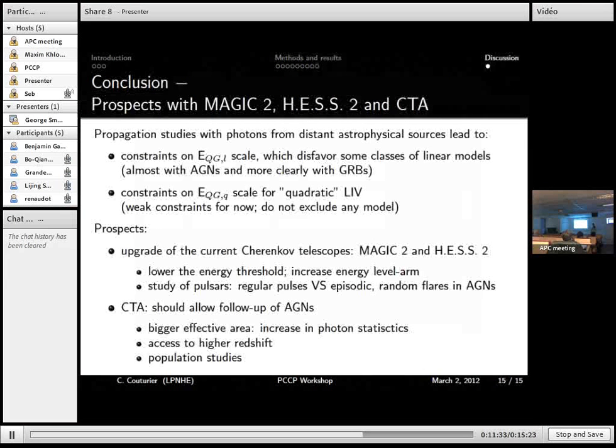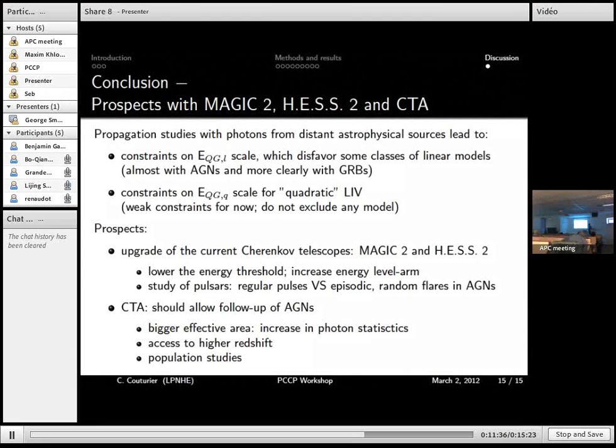So to conclude, propagation studies with photons from astrophysical sources gave us constraints on the quantum gravity scale. So if we take a linear model, it can disfavor some of the quantum gravity models. But so far the quadratic model cannot exclude any model so far.